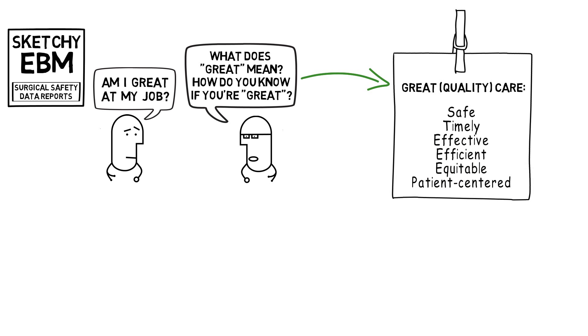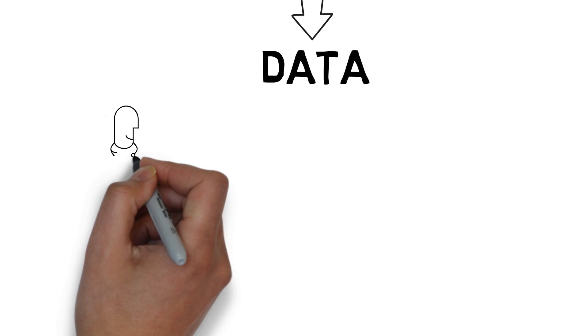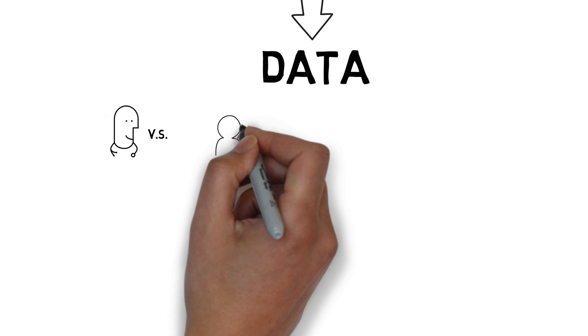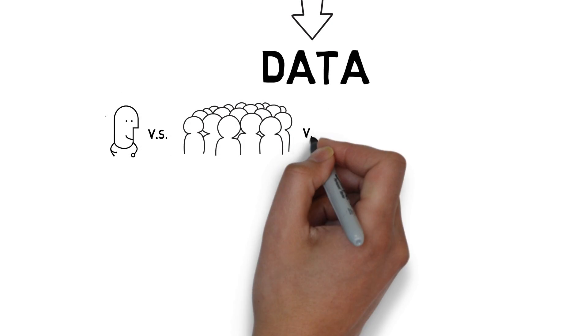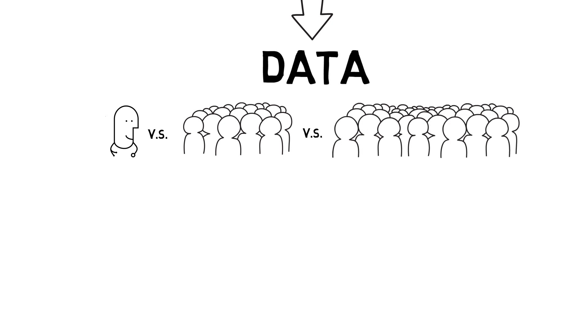Answering the second question is a little bit harder. I think you'll agree that for us to know whether or not we're great, we're going to need some information or data. And we're going to need more than just our own data about our own care. We're also going to need the data from other people's care so that we can compare ourselves to our peers.